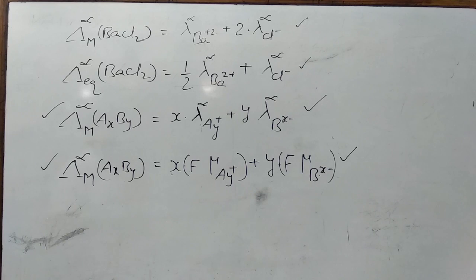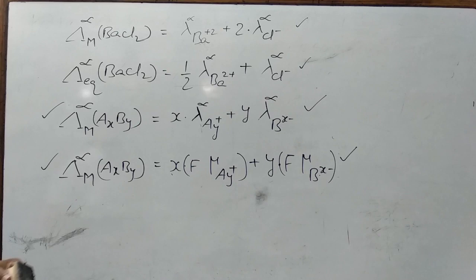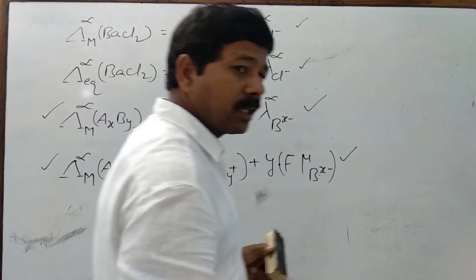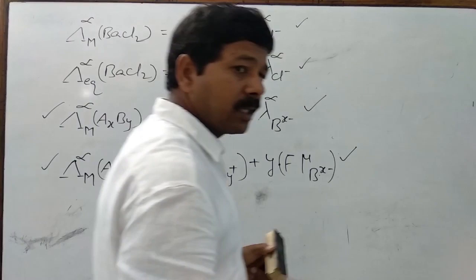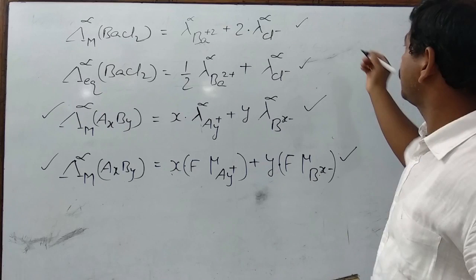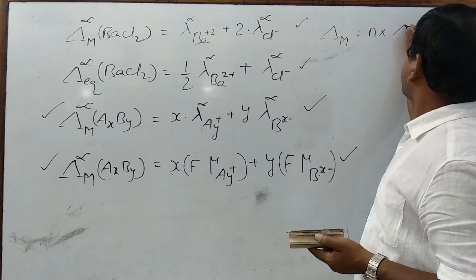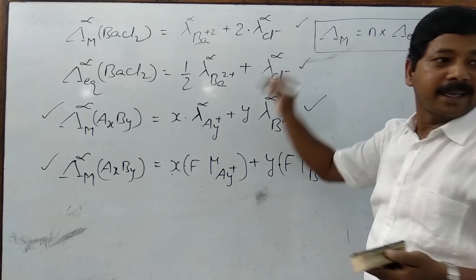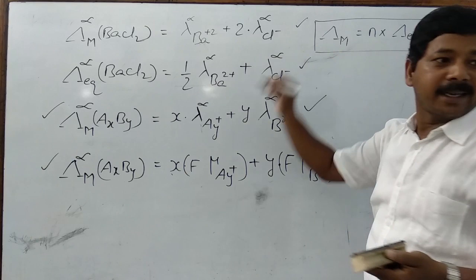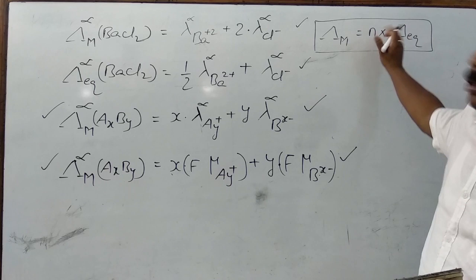The relation between molar conductance and equivalent conductance is: molar conductance = n-factor × equivalent conductance, where n-factor is the valency factor. This was discussed in the previous class. So if we know the equivalent conductance, the molar conductance is simply n-factor multiplied by equivalent conductance.